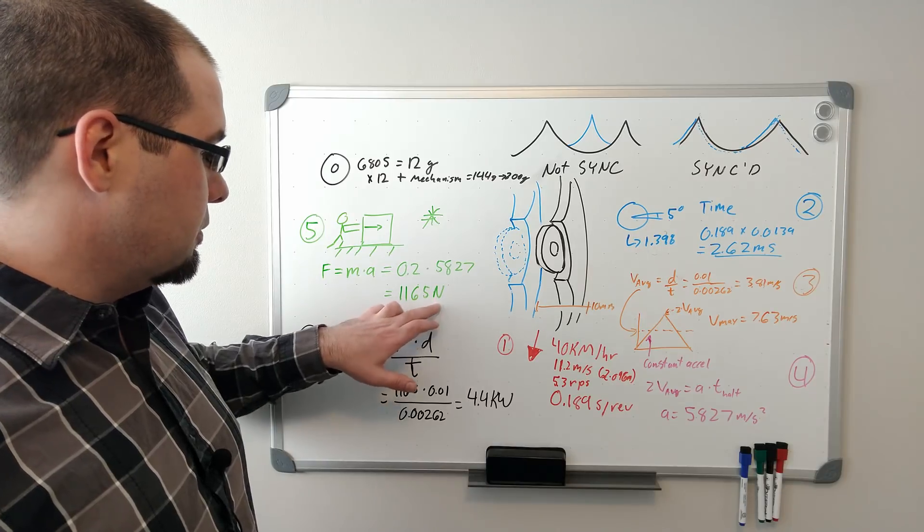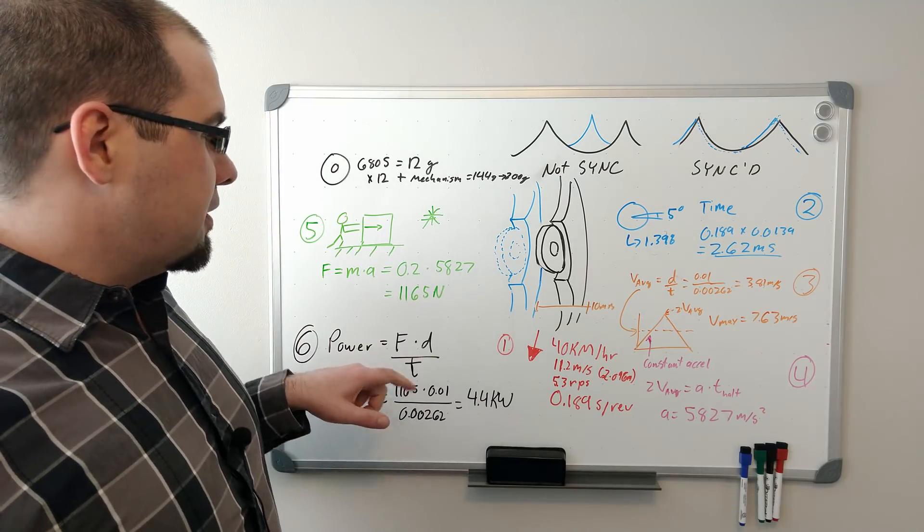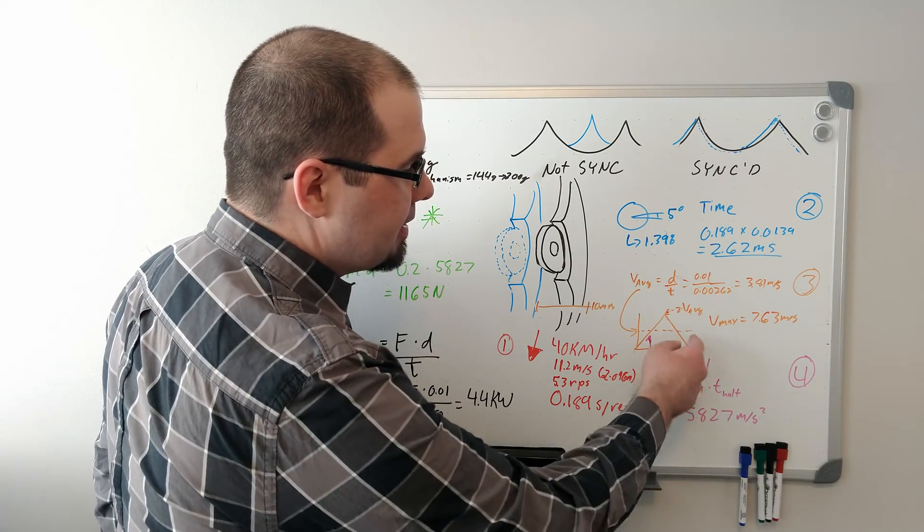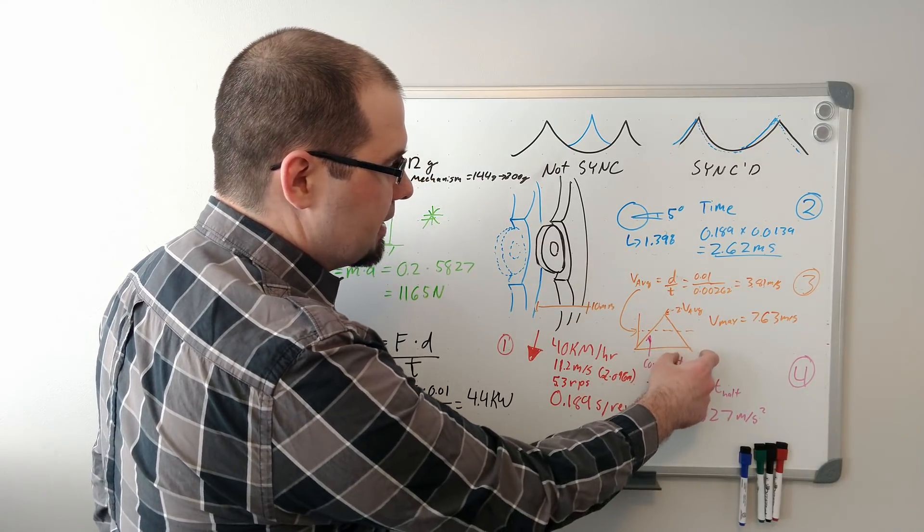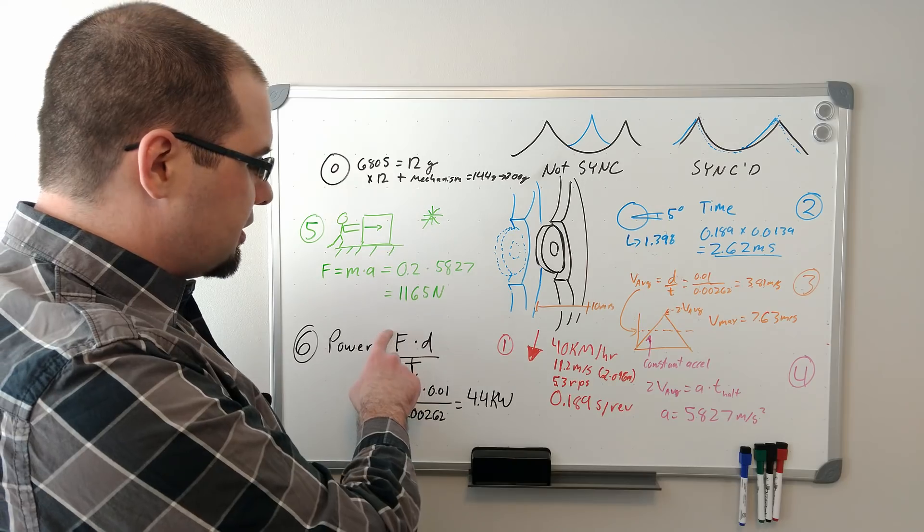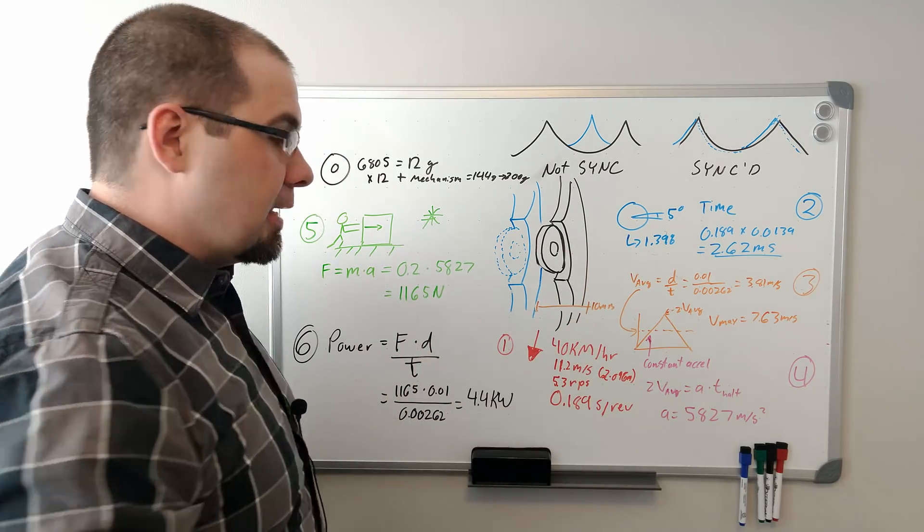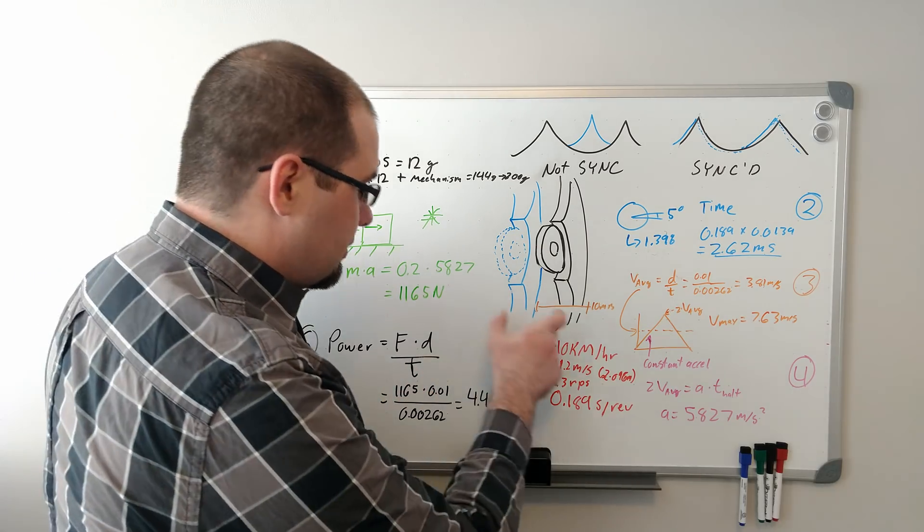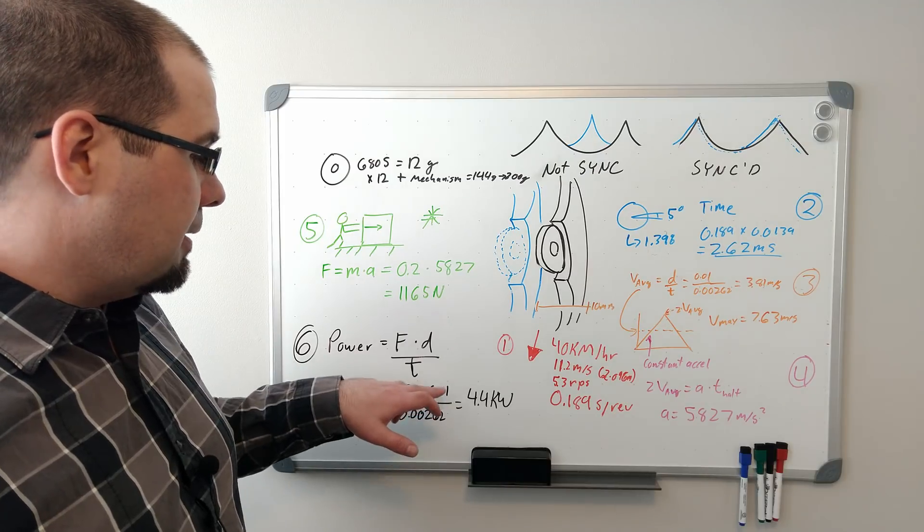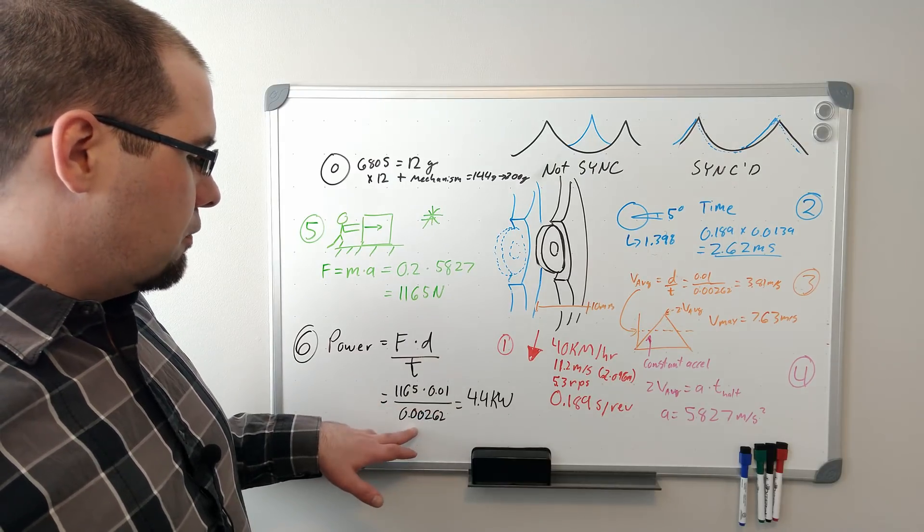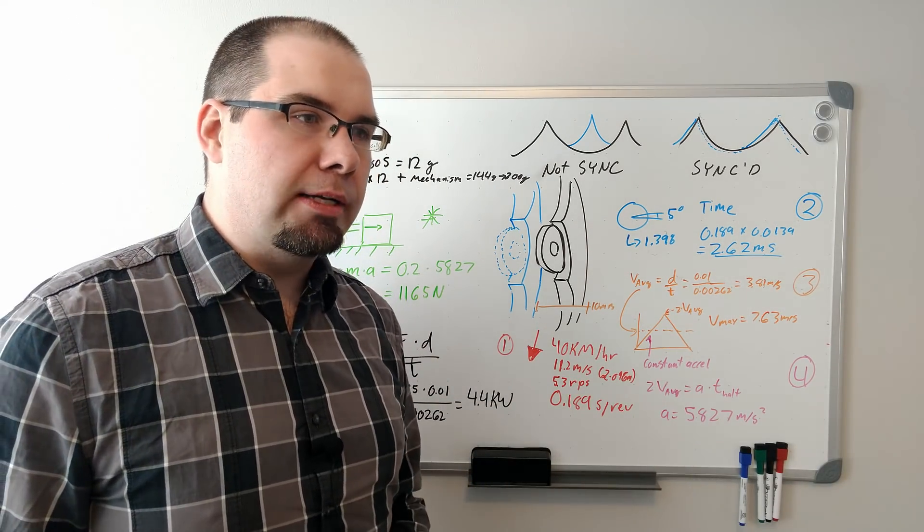So let's convert this to power. We have all the necessary things. So power is the force in newtons times the distance in meters over the time it takes for that to happen. And we can, because the force here is opposite and because the time is equivalent, we can just use our base units. So the force is the same for acceleration and deceleration, the distance is the same as the whole thing, and the time is the whole time of movement. So that means 1165 times 10 millimeters over 2.62 milliseconds gives us 4.4 kilowatts.